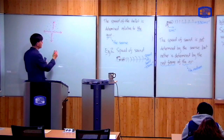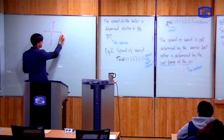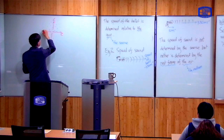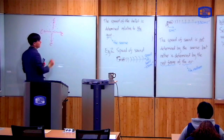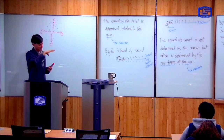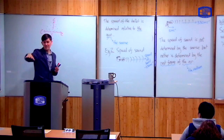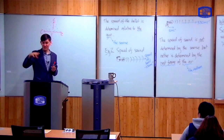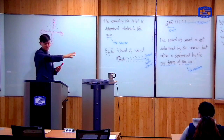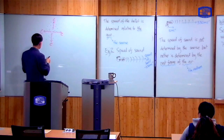So if the ether is stationary in space, then the speed of light should be c, the same speed, in all directions. In the same way that in this room the air is stationary and the speed of sound is the same in all directions. So in a stationary ether, the speed of light is the same in all directions.